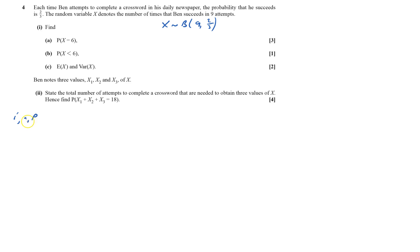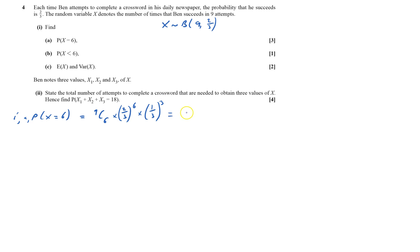Find the probability that X equals six. I'm going to use the binomial formula. So 9C6, and I've got to times that by two-thirds — how many successes do I want? I want six successes, so that's to the power of six. Then times that by one-third, the failure probability, and I've got three failures. That gives me 0.27312909, which equals 0.273 to three significant figures.